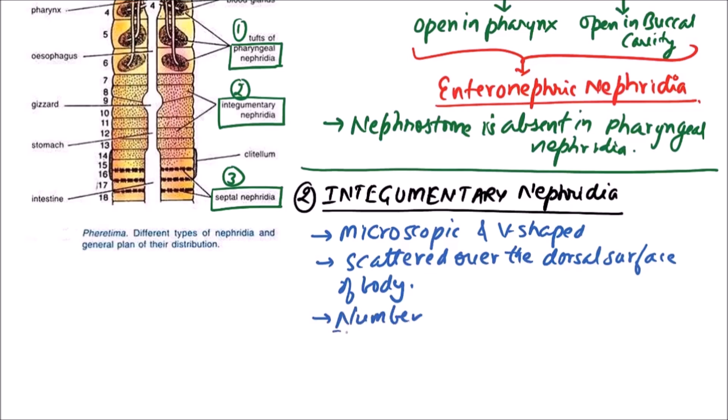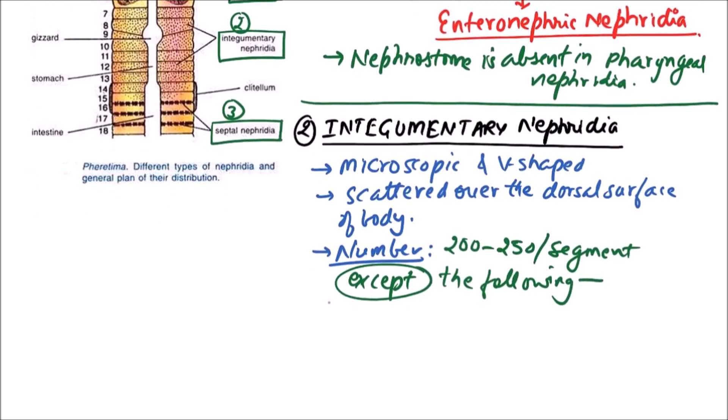Number: these are 200 to 250 per segment except the following. Now what are these exceptions? A. Absent in first and second segments.